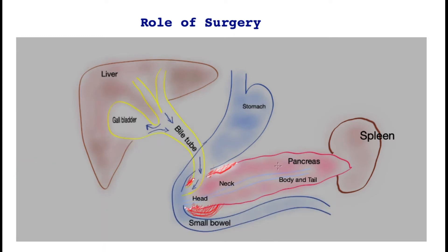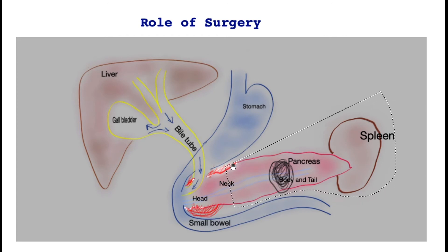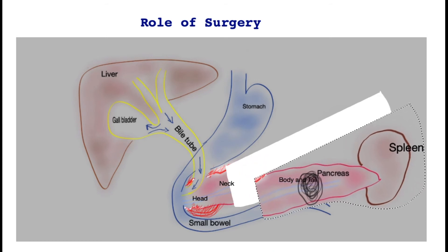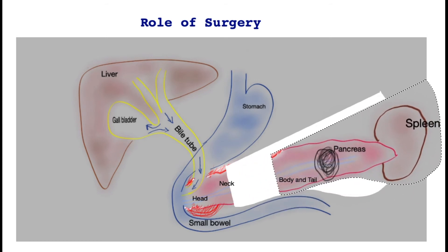What if the tumour is in the body or tail of the pancreas? In this case, the options for surgery are different. The pancreas is divided at the neck, and the body and tail are removed along with the tissue beneath it as well as the spleen — all coming out as a single piece. This is called a distal pancreatectomy, and in this case no new joint is required.